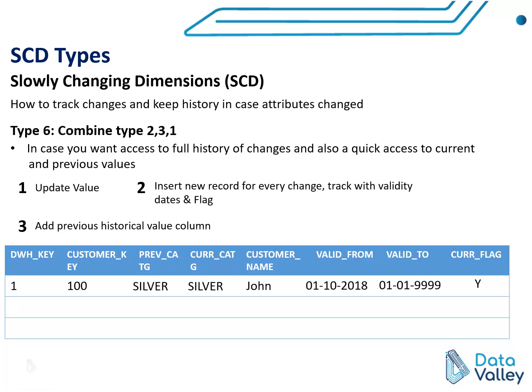Let's assume the initial data for this customer has a Silver category. This is the initial data, so previous category and current category are both the same. This information is valid starting from 1st of October 2018, with the default value for valid to as discussed in Type 2 before. This record is the most recent record for this customer, so we have a flag of Y.